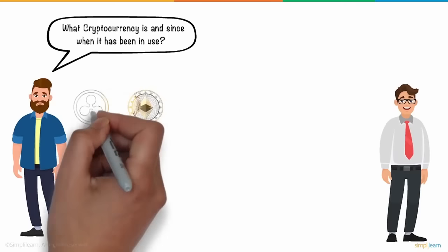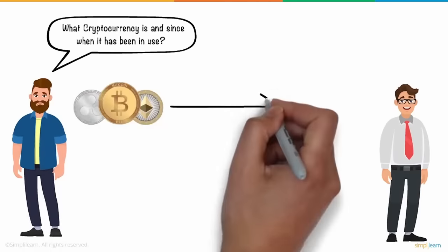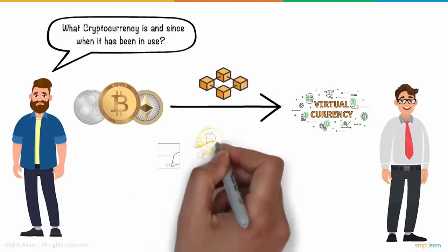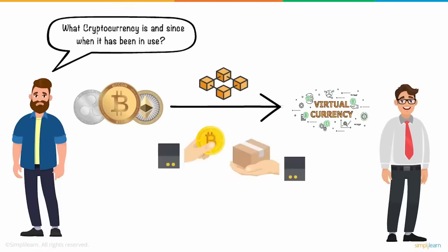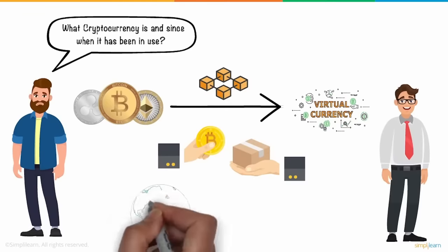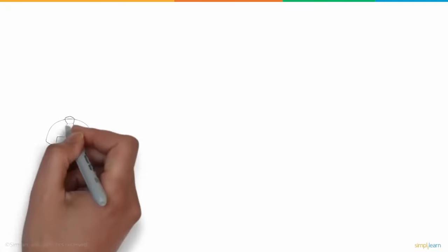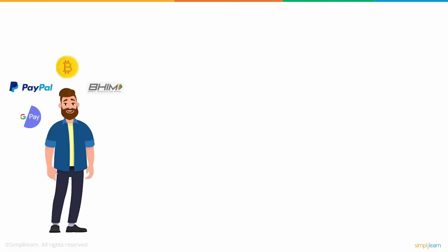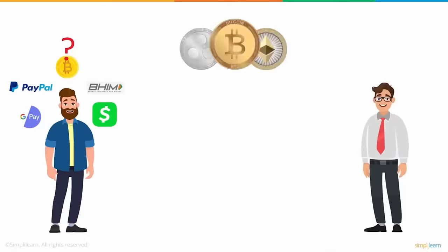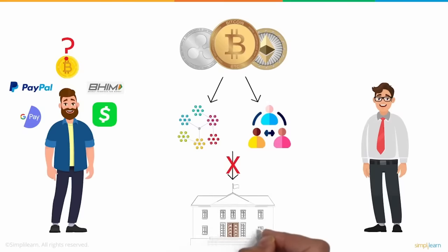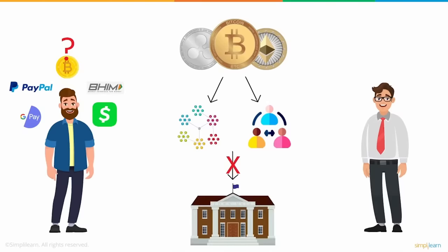Frank explained that cryptocurrency is a virtual or digital currency that works on blockchain technology and is designed to work as a medium of exchange online — to buy goods and services and make payments. It was first introduced to the world in 2013 by Satoshi Nakamoto. Daniel felt it sounded similar to other online payment options and asked what makes it different. Frank explained that cryptocurrency is decentralized and free from any third-party interference, meaning it is not issued or controlled by any government or central authority.